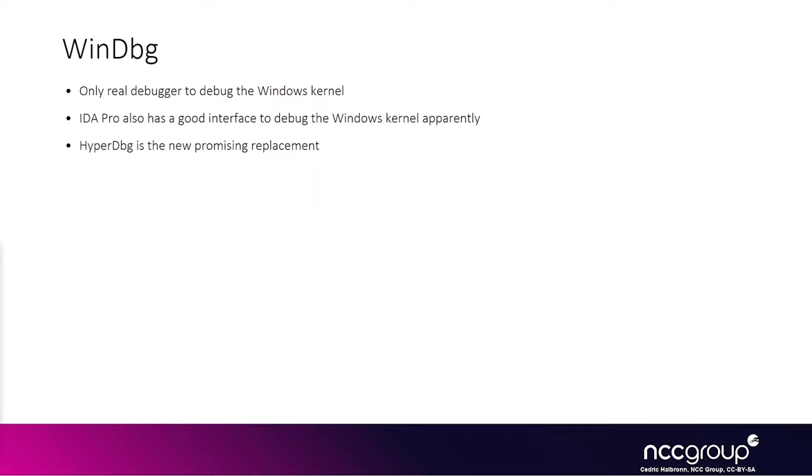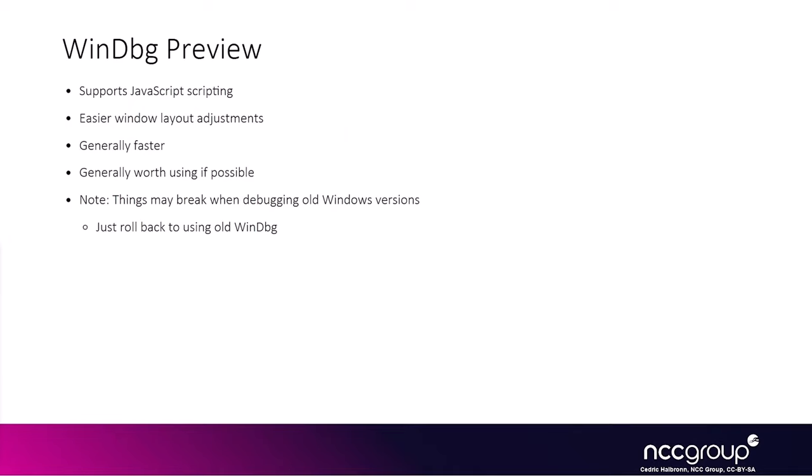There are two alternatives. The first one is IDA Pro, which has a good interface to debug the Windows kernel, but we're not going to use that technique — we're going to use WinDBG synchronized with a disassembler via a plugin, as we'll see later. The other technique is HyperDBG, which is a new promising replacement, but for this presentation we're going to focus on WinDBG.